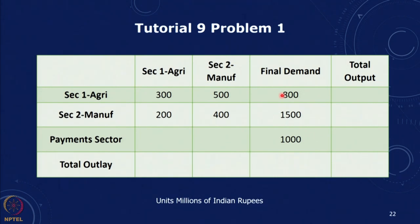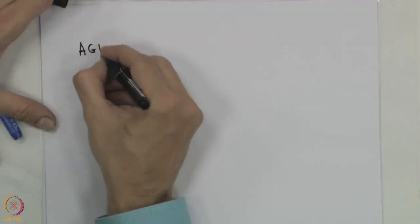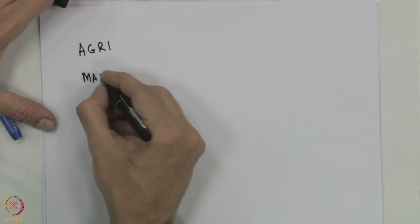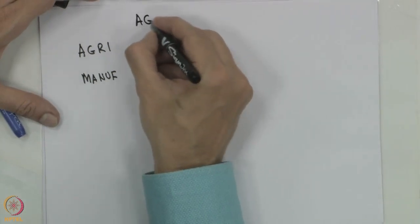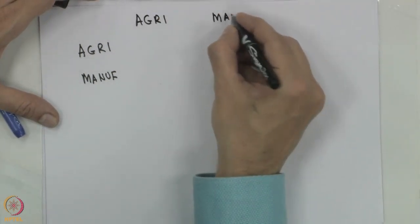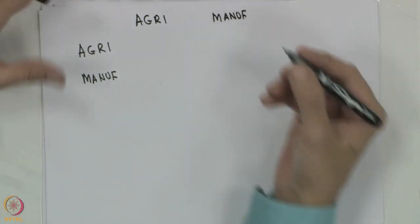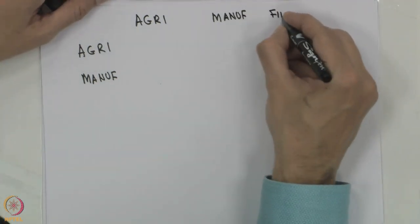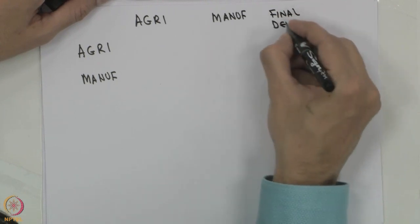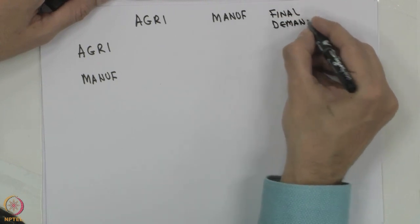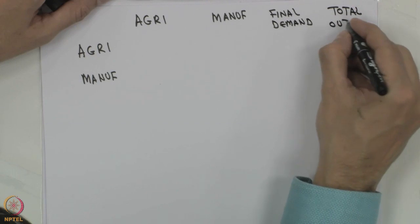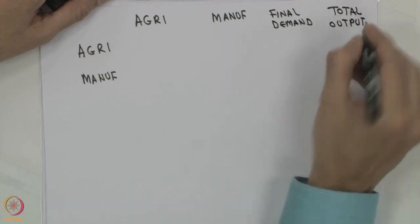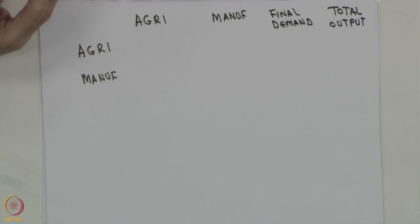So, there are two sectors given here: the agriculture and the manufacturing sector. We are talking of this in money terms, in million rupees. A partial table of transactions has been given to you. The unit is million Indian rupees.